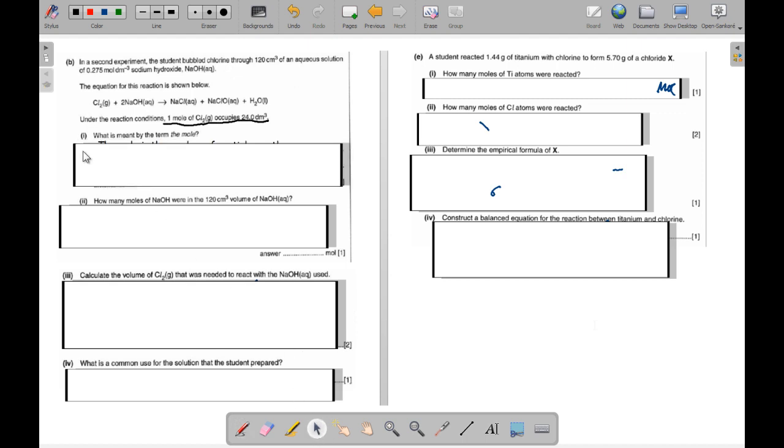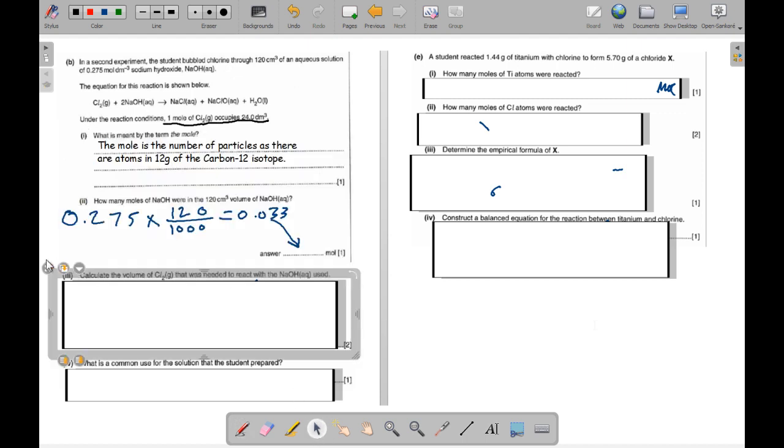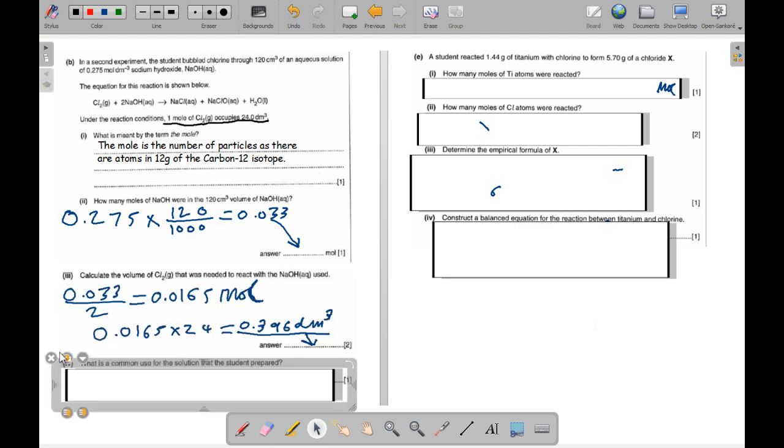Deleting all our boxes. The mole is the number of particles, the number of atoms in 12 grams of carbon-12 isotope. One mark. 0.275 over 120 over 1000 is 0.033 moles. 0.033 over 2 because the molar ratio is 2 to 1 gives 0.0165 moles. Then we times that by 24 and we get 0.396 decimeters cubed. Notice that they haven't put in the units. That's the second mark. Put in the right units. The common use of the solution that the student prepared is bleach.